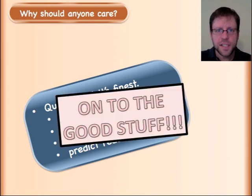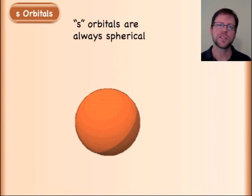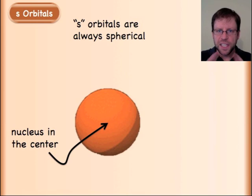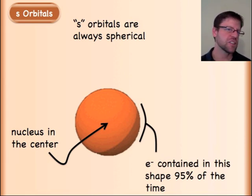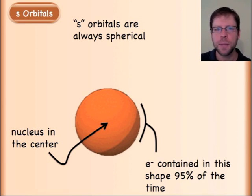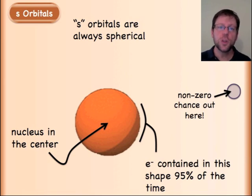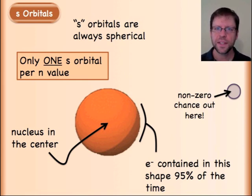Now on to the good stuff. Let's start talking about atomic orbitals. Here's your first atomic orbital — it is an s orbital. S orbitals are always spheres. That's a coincidence; the 's' doesn't stand for sphere — I think it's for 'sharp' actually. The nucleus sits in the middle of that sphere. The sphere itself represents how the electron behaves around it, and it contains the probability of finding the electron 95% of the time inside of it.